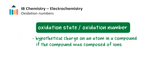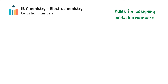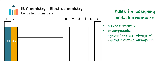The oxidation state of an atom is a hypothetical charge if we treat all of its bonds as if they were ionic, or as if all the atoms were ions. Oxidation numbers can be positive, negative, or zero. The magnitude and sign of the oxidation number helps us identify the degree to which an atom is oxidized. Here are the rules for assigning oxidation numbers: an element in its elemental state has an oxidation number of zero. In compounds, group 1 metals always have a +1 oxidation number, group 2 metals always have a +2 oxidation number, and halogens are −1.